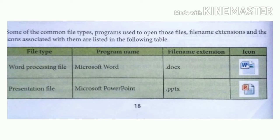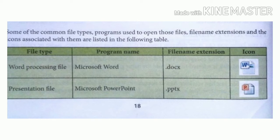Let's discuss some types of files. As you can see in the picture: a word processing file — the program name is Microsoft Word, and the file extension is .docx; its icon shows a 'W'. Then, a presentation file — when you need to make a presentation, the program name is Microsoft PowerPoint, and the file name extension is .pptx.